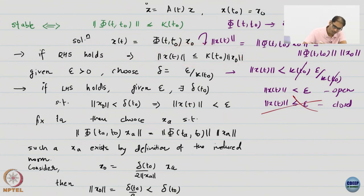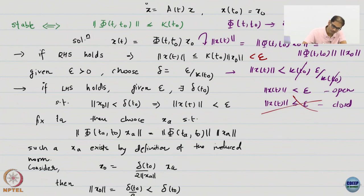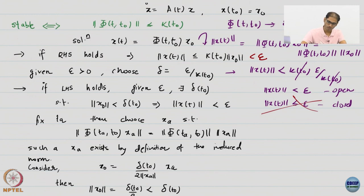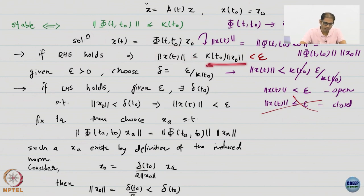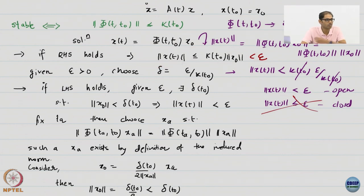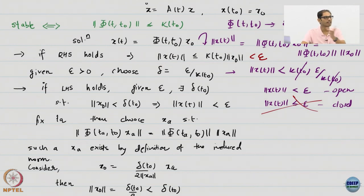How did I get the delta choice? I needed the norm of x to be less than epsilon. From this I can directly get what I need x0 to be smaller than — because x0 has to be smaller than epsilon over K(T0) for this to happen. I have simply used these inequalities: I need x to be less than epsilon, so if I take this quantity which is possibly larger than norm x and make that less than epsilon, then it is guaranteed that x is also less than epsilon.